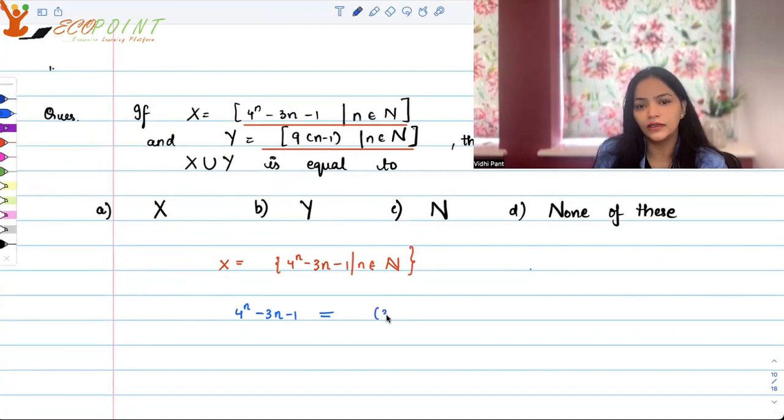4^n is nothing but (3+1)^n. I can say so, right? So it's (3+1)^n.